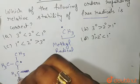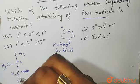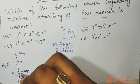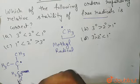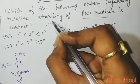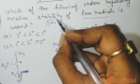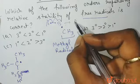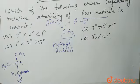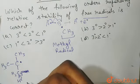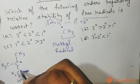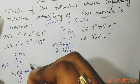Now, homolytic fission of the bond takes place. Homolytic fission means the bond breaks such that one electron goes toward atom A and one electron goes toward atom B, giving A radical plus B radical. Similarly, you will get an H radical, and this carbon will get a radical, which will then form a bond.